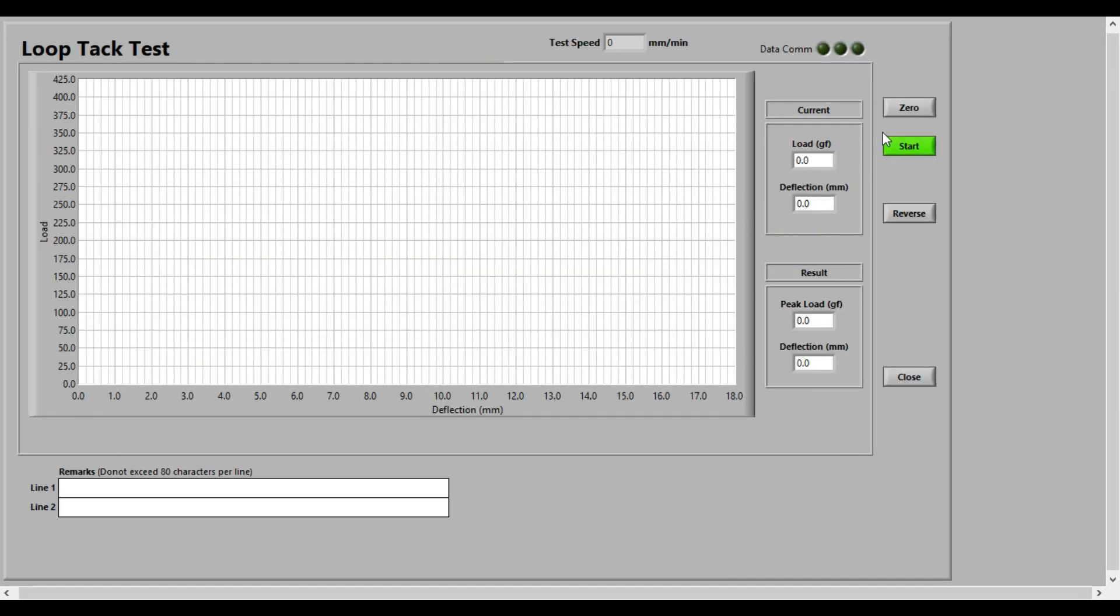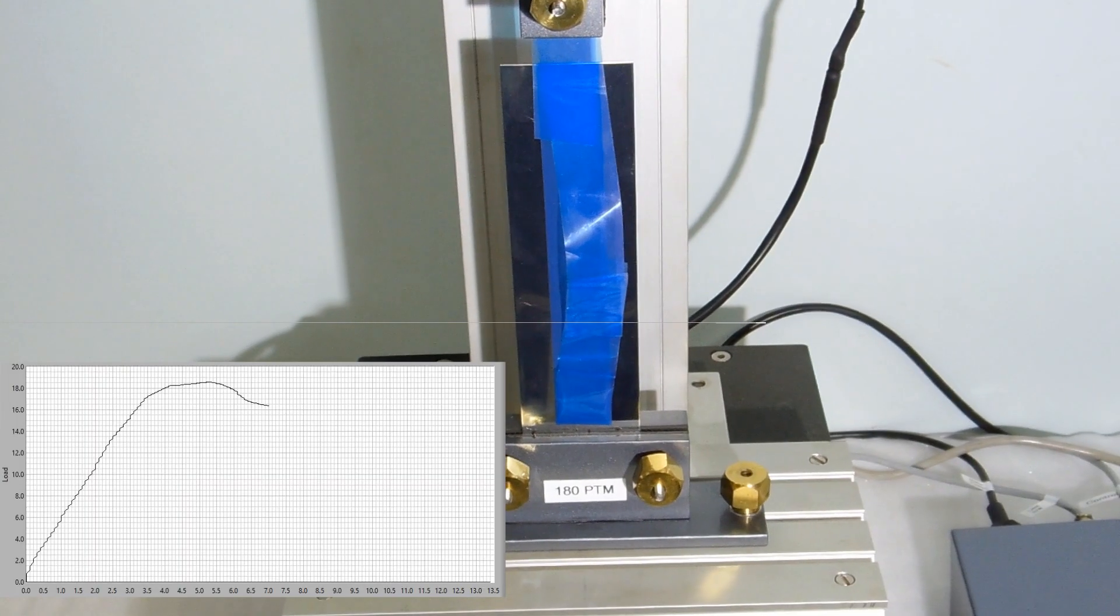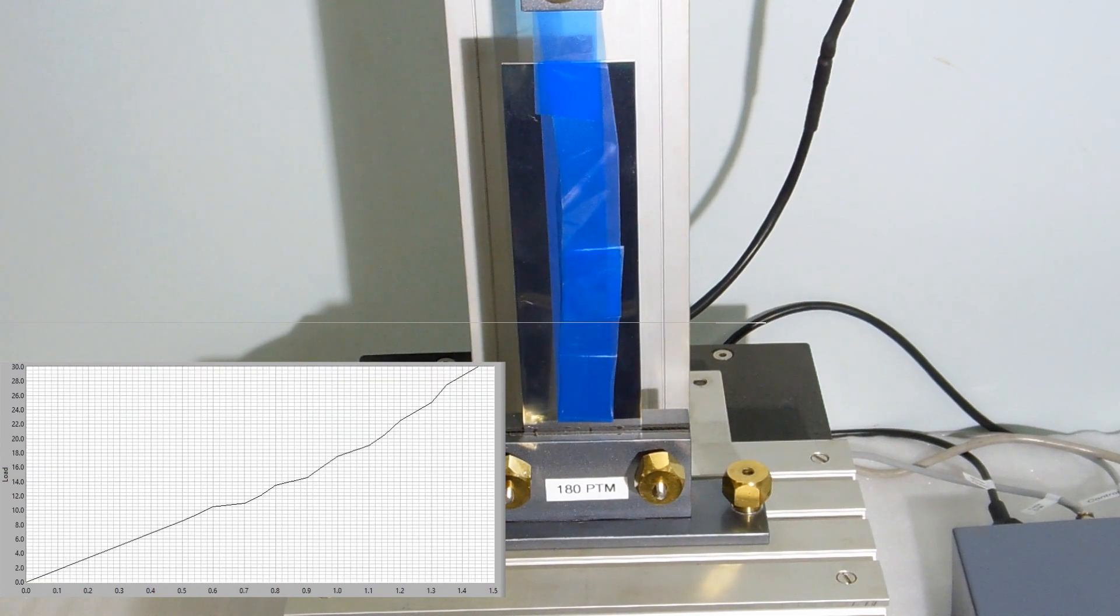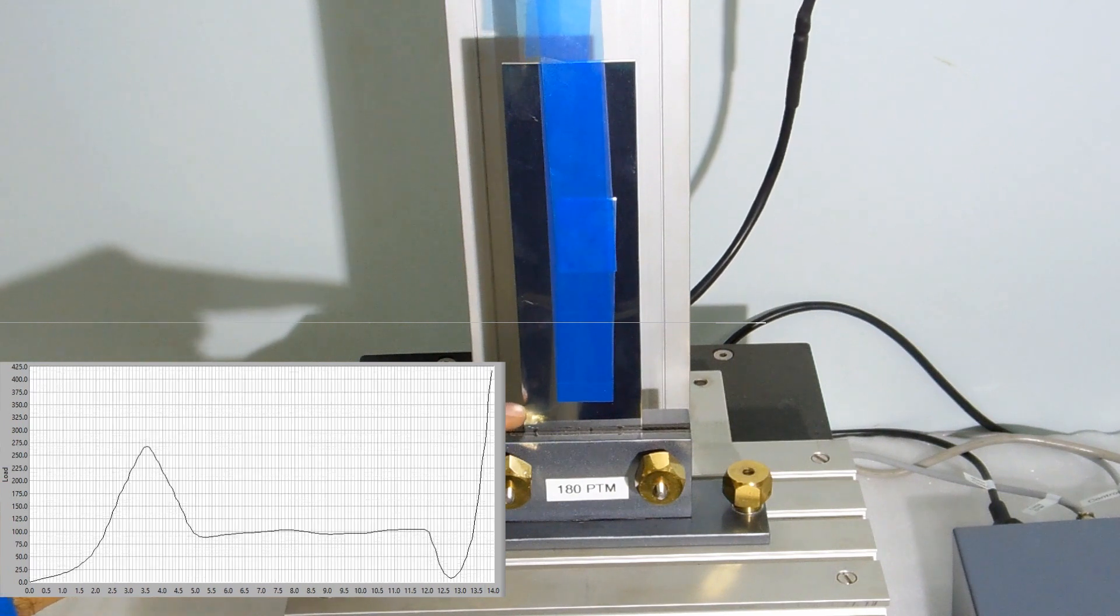With the sample slightly loose, press zero button, then press start. The top grip will start moving upwards and pull the sample. You will soon see a graph on the monitor.